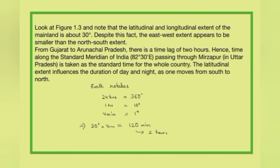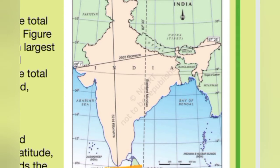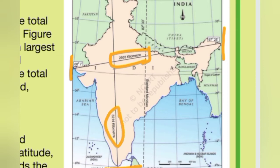The latitudinal extent influences the duration of day and night as one moves from south to north. Looking at the map, the latitudinal extent is almost 30 degrees, and similarly the longitudinal extent is also 30 degrees. India's west-to-east extent is 2,933 kilometres, and the north-to-south extent is 3,214 kilometres.